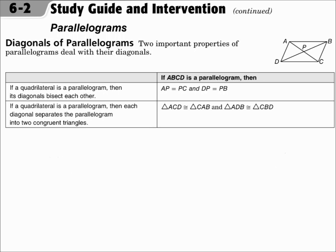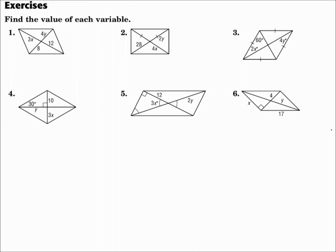The diagonals of parallelograms have important properties as well. The diagonals bisect each other, so the two halves of each diagonal will be equal. And each diagonal separates the parallelogram into two congruent triangles, so you can use congruent triangle properties as well. Find the value of each variable — and once again, all of these are parallelograms.